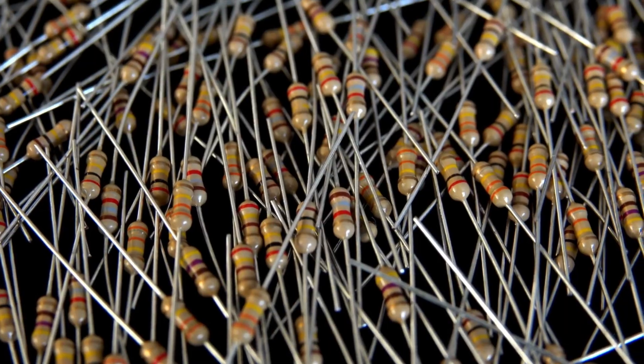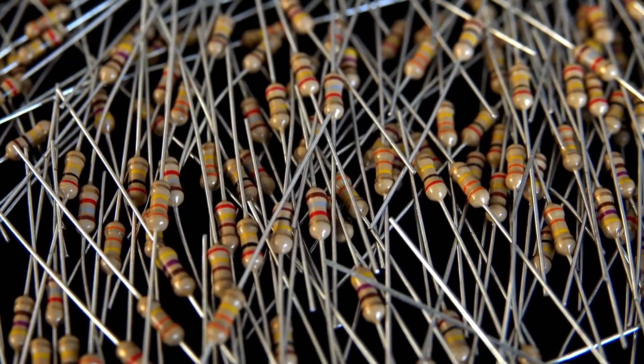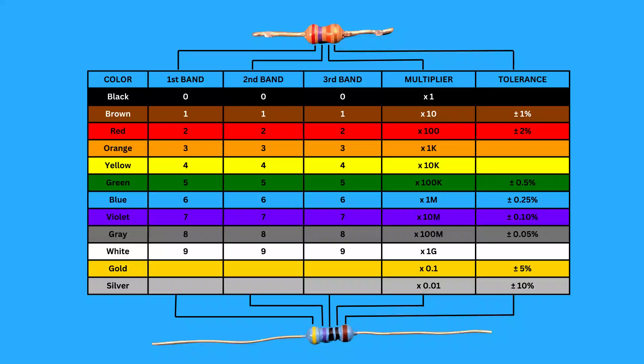Resistors typically have four or five color bands that indicate their value. We're going to use this resistor color code chart to help us calculate the resistor value. The 4-band resistor has the following characteristics: The first band represents the first digit of the resistor's value. The second band represents the second digit. The third band is about multiplying the first two digits. The fourth band is tolerance, which shows the accuracy of the resistor's value.